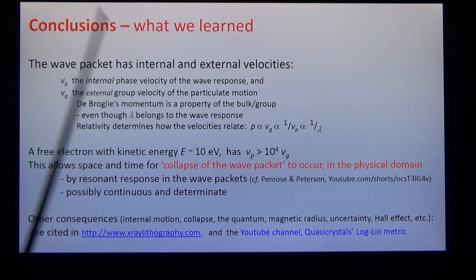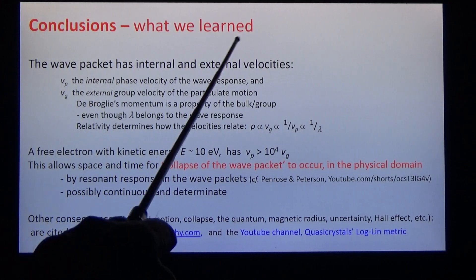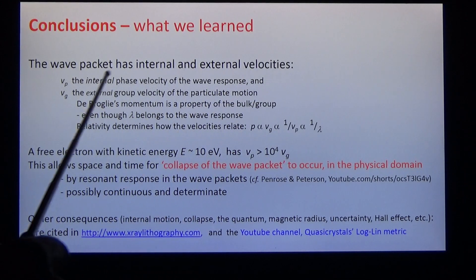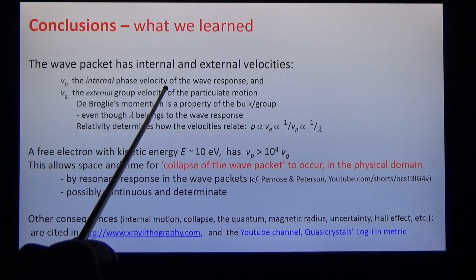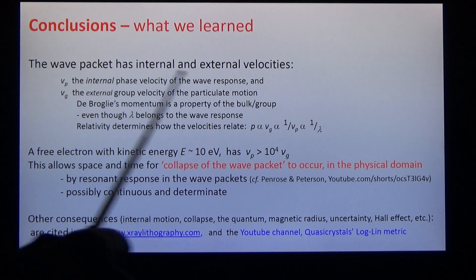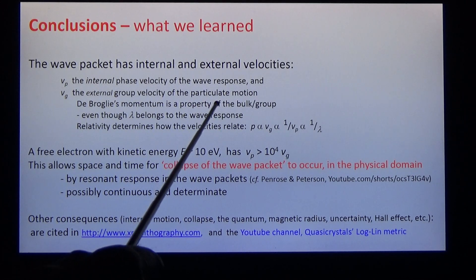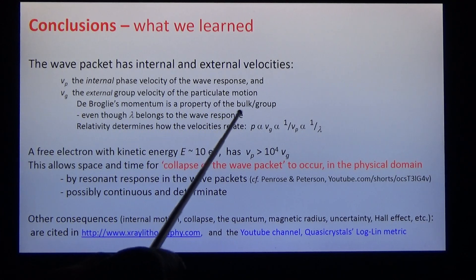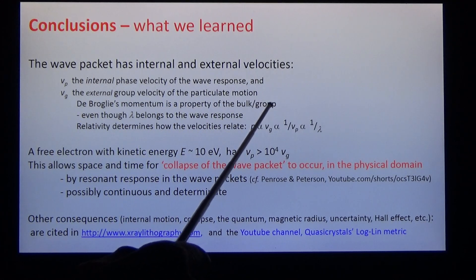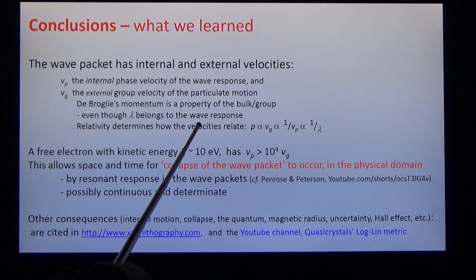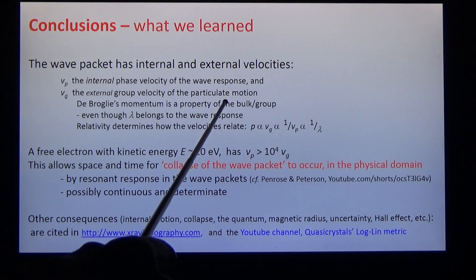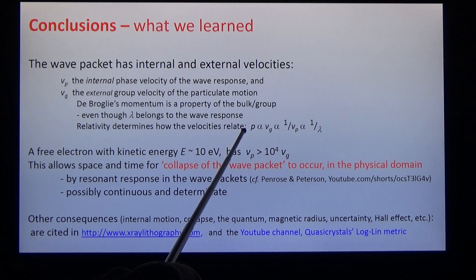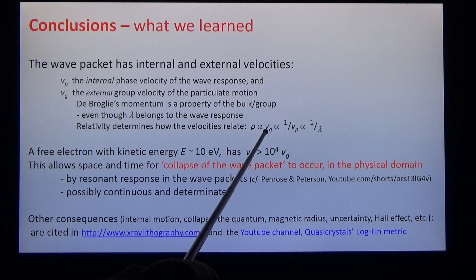What have we learned from de Broglie? The wave packet has internal and external velocities: the internal wave velocity of the wave response and the external group velocity of particulate motion. De Broglie's momentum is a property of the bulk group, even though lambda belongs to the wave response. Relativity determines how the velocities relate.